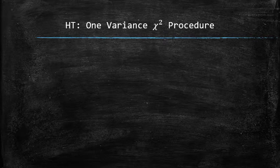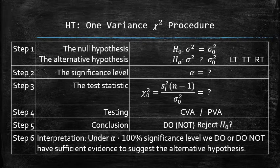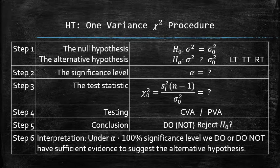We will use the following template to perform the hypothesis testing. In step 1, we will set up the hypothesis. In step 2, we will identify the significance level. In step 3, we will find the test statistic using the formula. In step 4, we will perform either the critical value approach or p-value approach to test the claim. In step 5, we will draw the conclusion. And finally, in step 6, we will interpret the results.